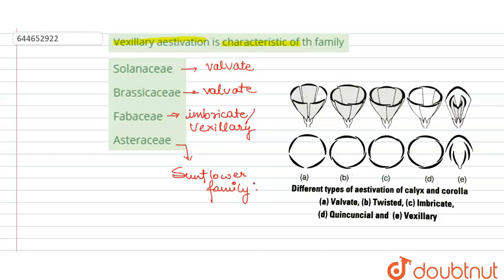and the corolla is gamopetalous, that is fused, and which shows the valvate aestivation. So here also it is showing valvate aestivation.